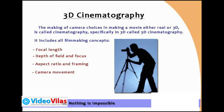3D Cinematography. The making of camera choices in making a movie, either real or 3D, is called Cinematography. Specifically in 3D, it is called 3D Cinematography. Even if you are looking at film, you will look completely at camera choices and lighting choices control.